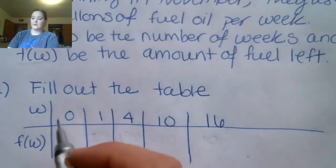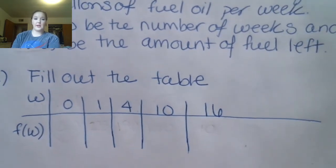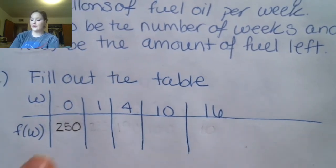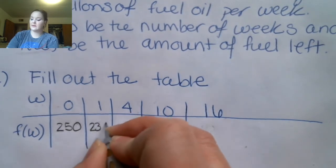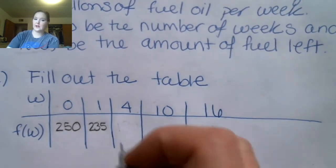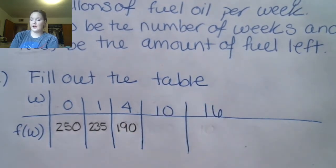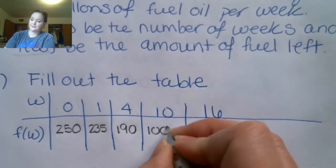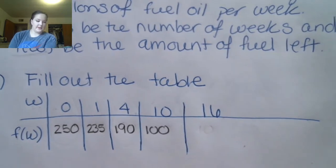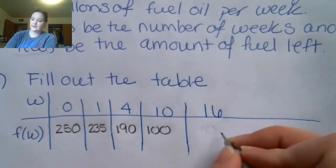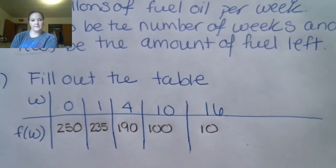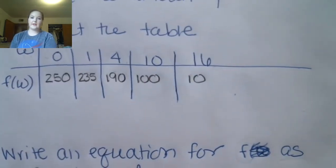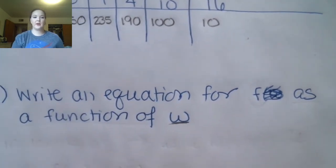If it has been zero weeks — meaning no time has passed — the fuel oil tank is still full, so they have 250 gallons. After one week, they've used 15 gallons. After four weeks, they've used 60 gallons. After 10 weeks, they've used 150 gallons, which would leave them with 100. And after 16 weeks, they've used 240 gallons, which would leave them with 10.